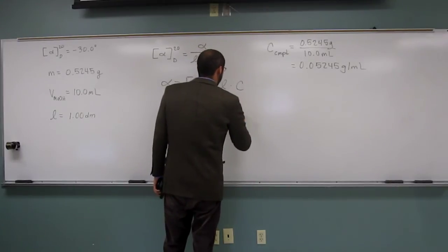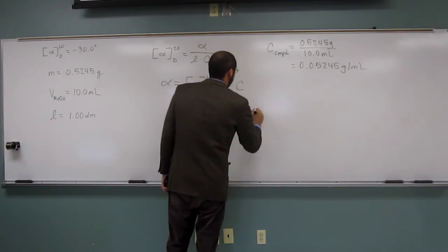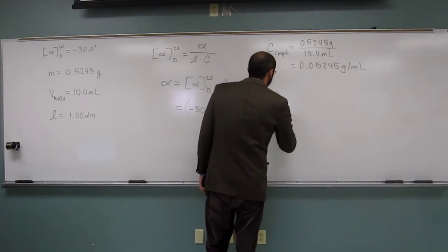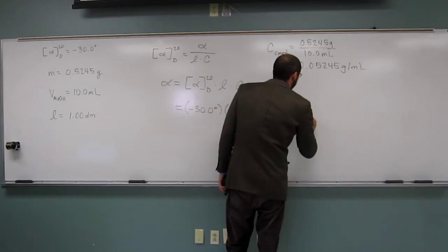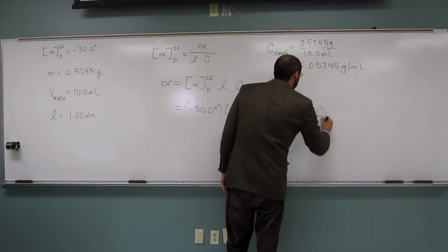Negative 30 times 1.0 decimeters times, that's how many... 0.05245 grams per mil. Like that?